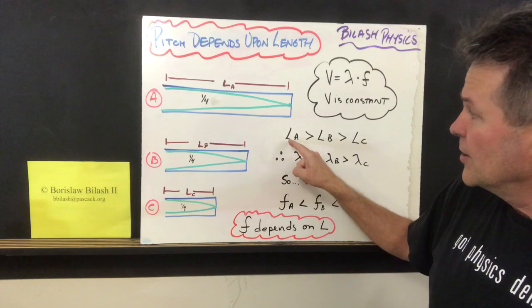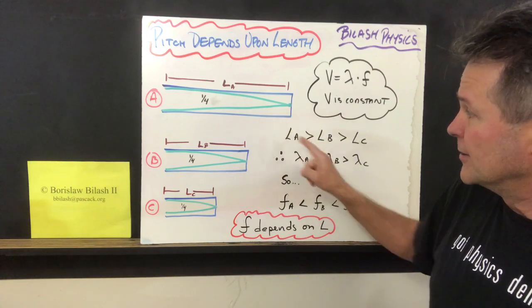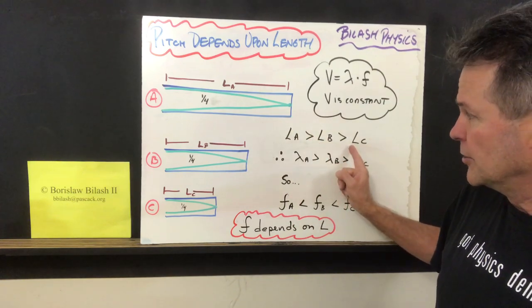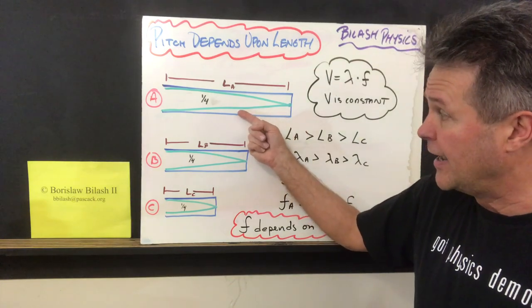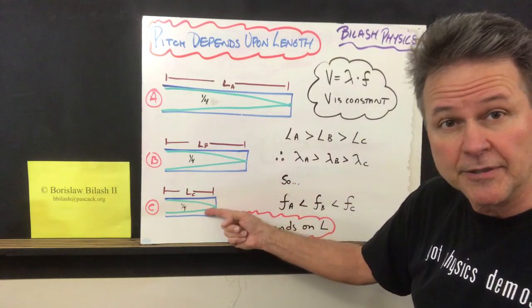So in this case we see that the length of a is larger than b, and that's larger than c, so that means that the wavelength is larger for a compared to b compared to c.